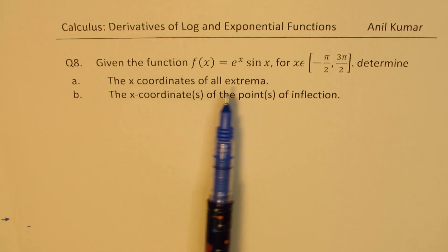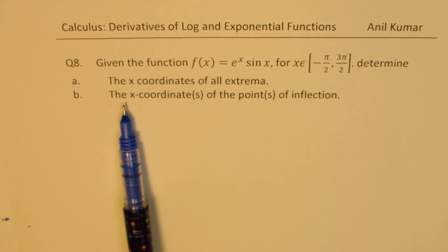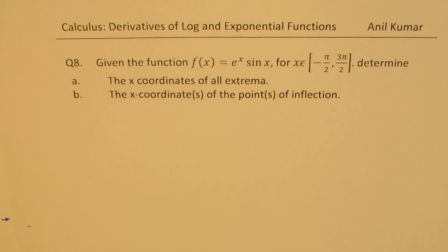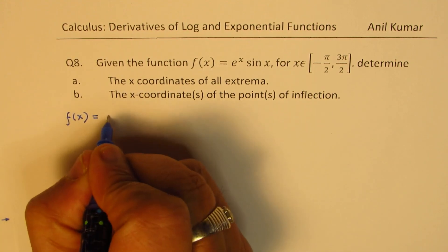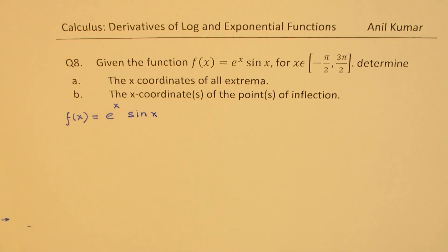So to find the extrema points we will do the first derivative equate to 0, and for the point of inflection we'll equate the second derivative to 0. So the function given to us is f(x) equals to e to the power of x sin(x). We're working in a closed domain minus π/2 to 3π/2.